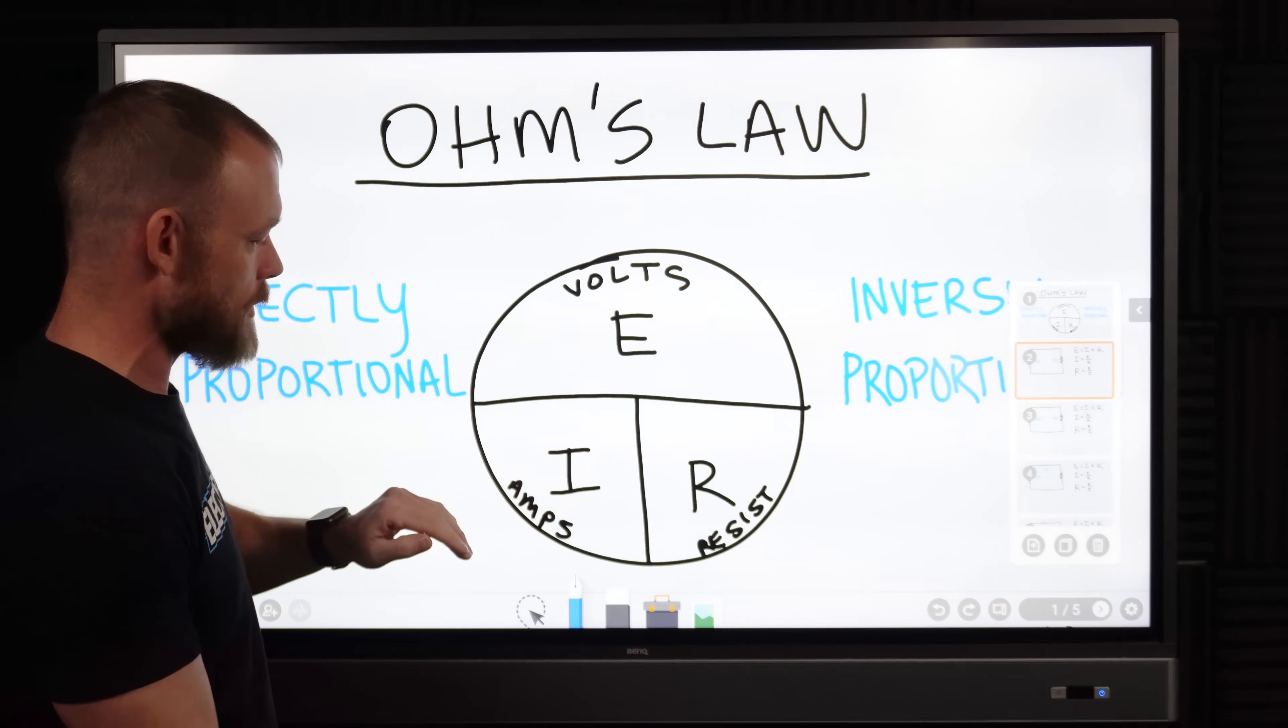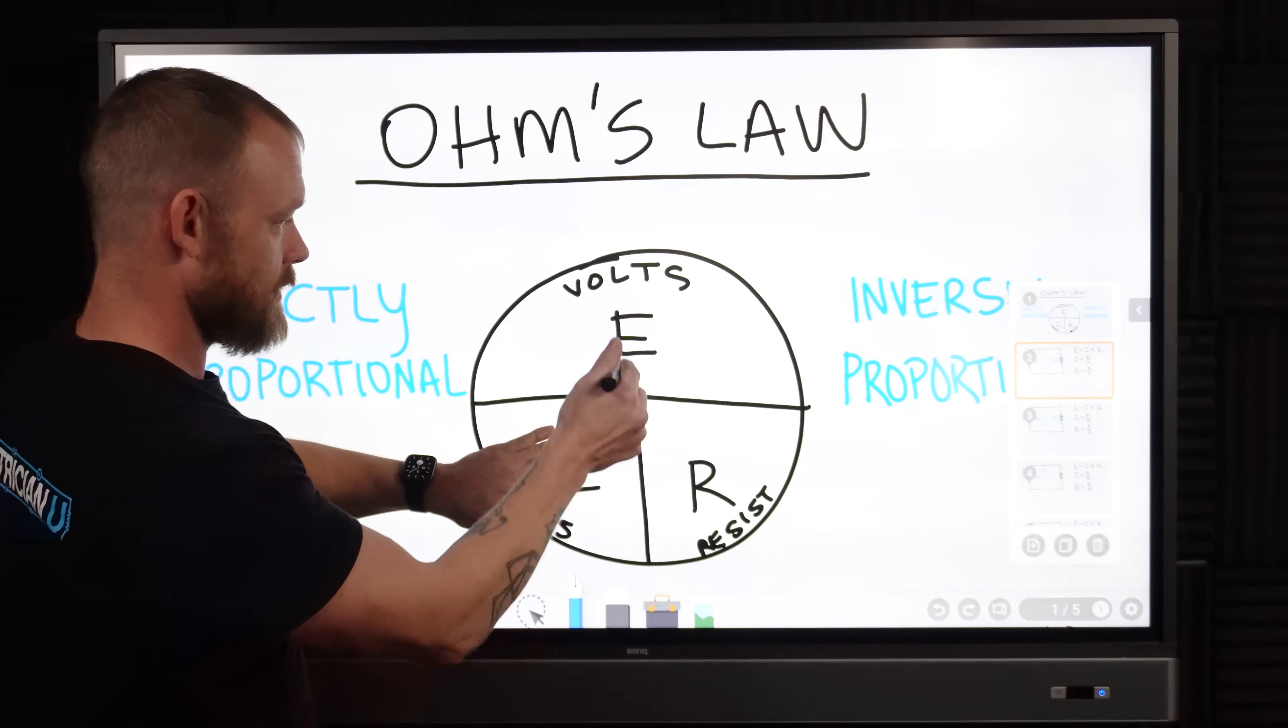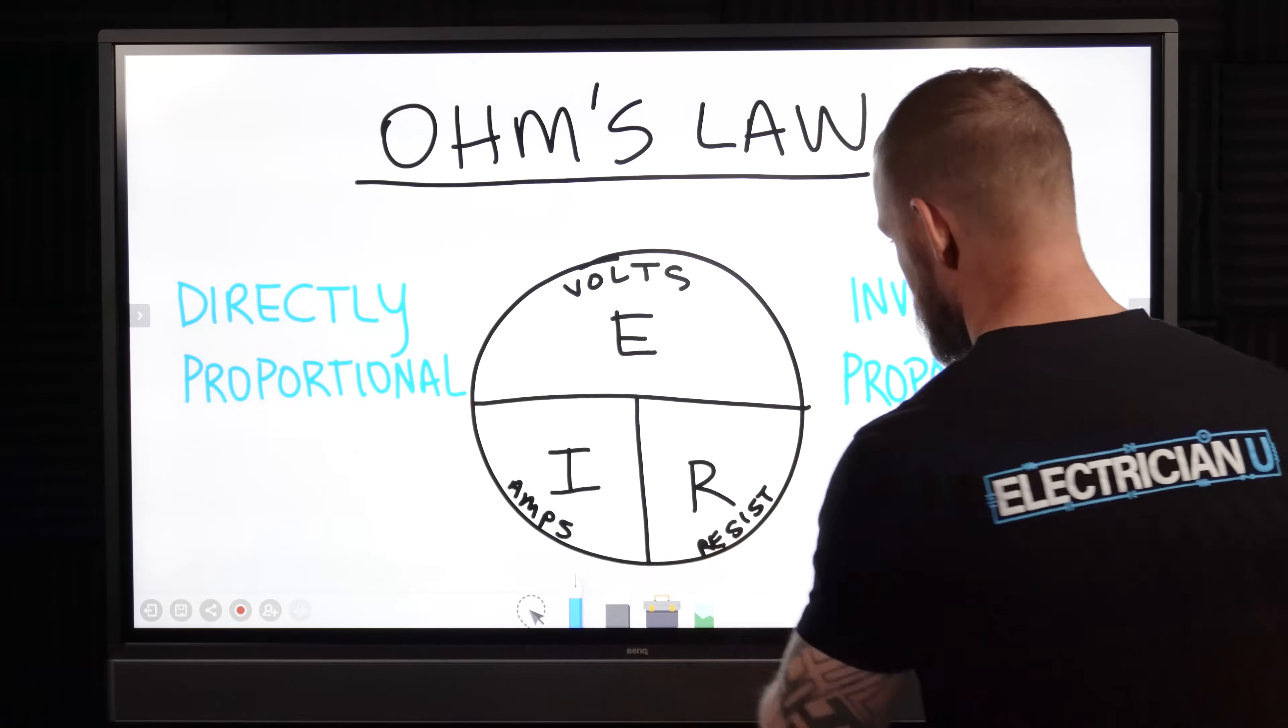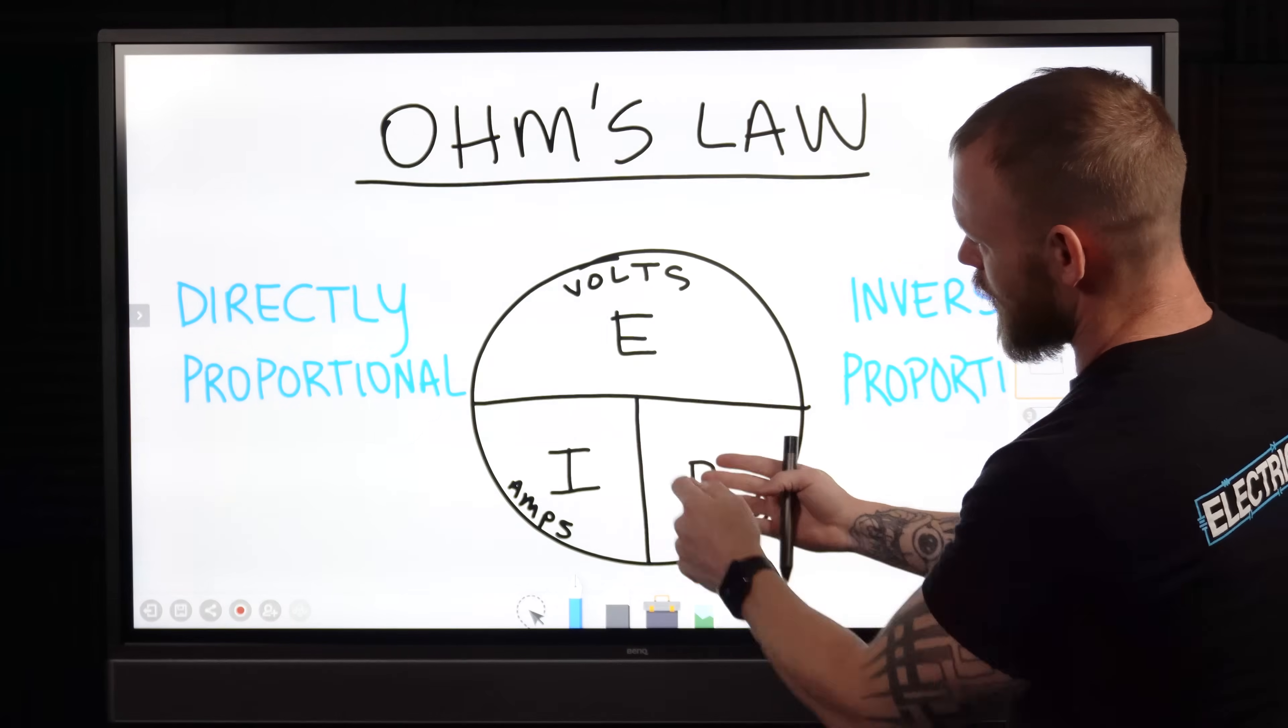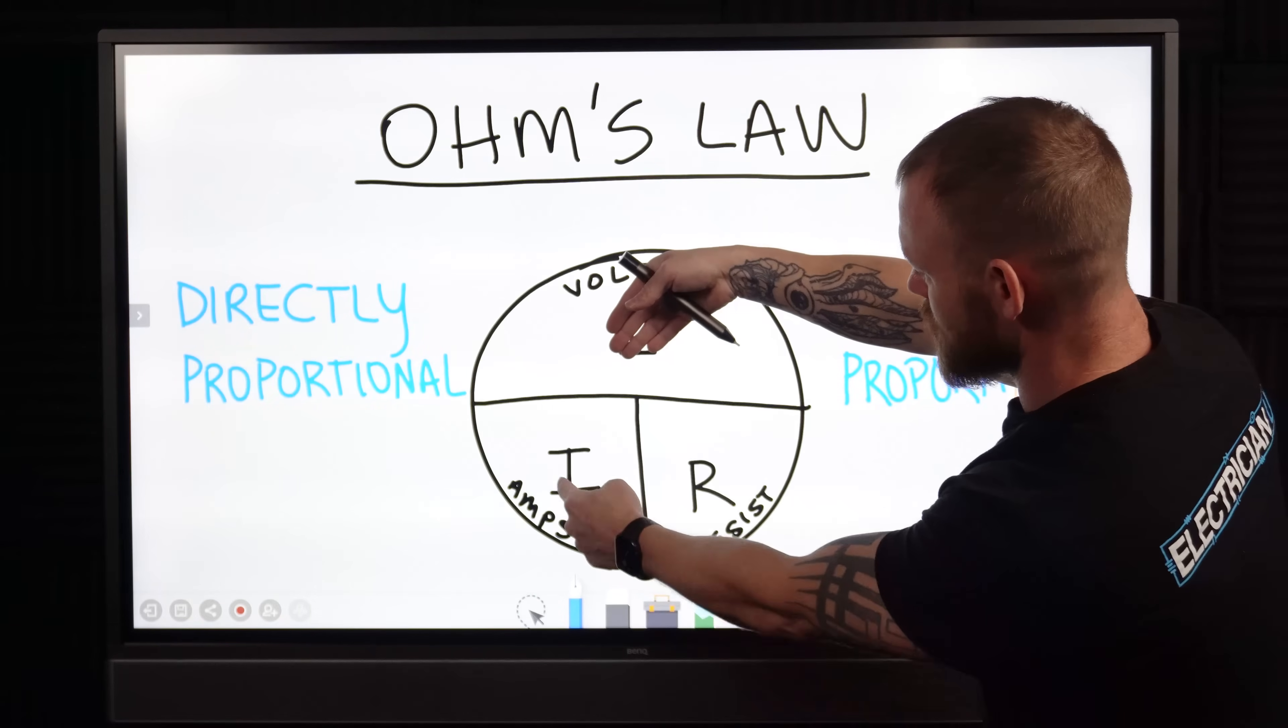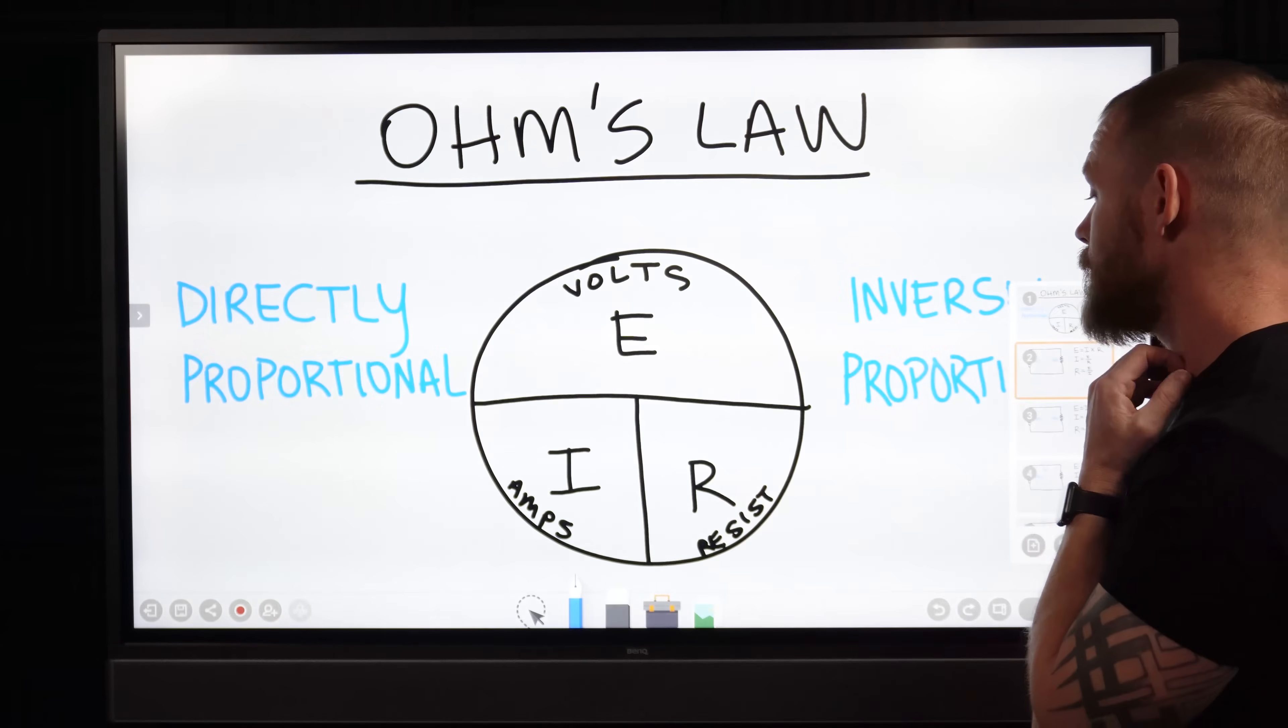If you're trying to solve for I, you know that your formula is going to be I equals E over R. You just hide the value you're trying to find. For resistance you hide R and say R equals E over I. Same thing here, if you're trying to find voltage you go E equals I times R.